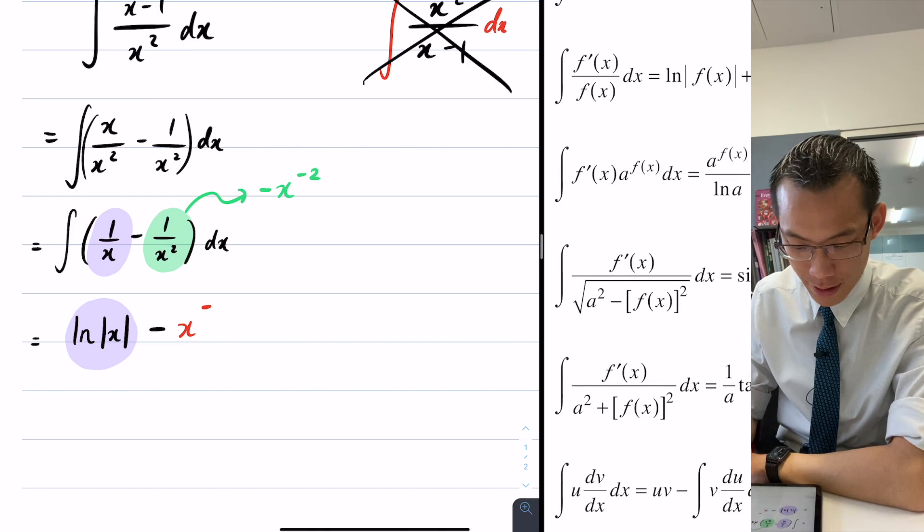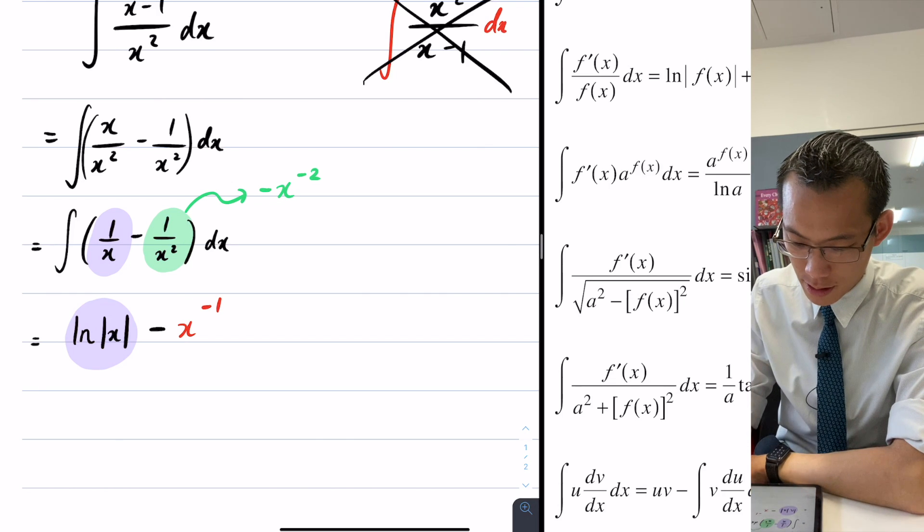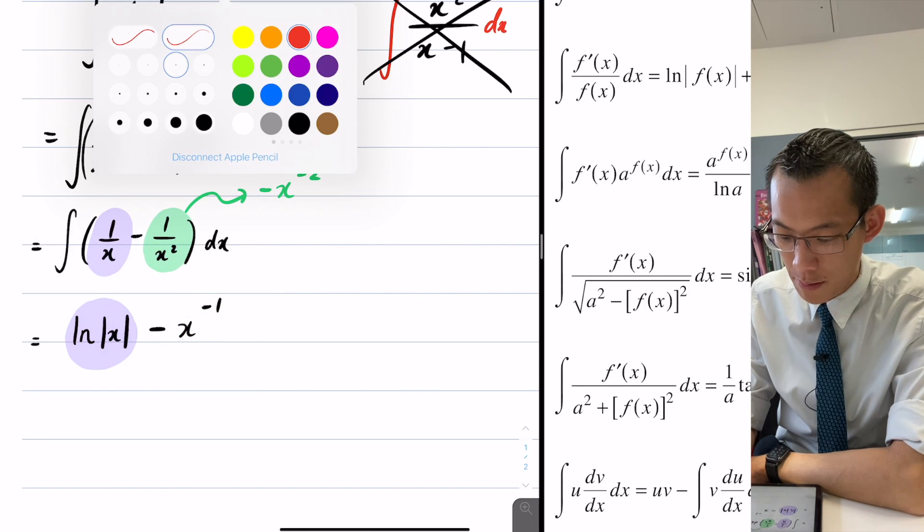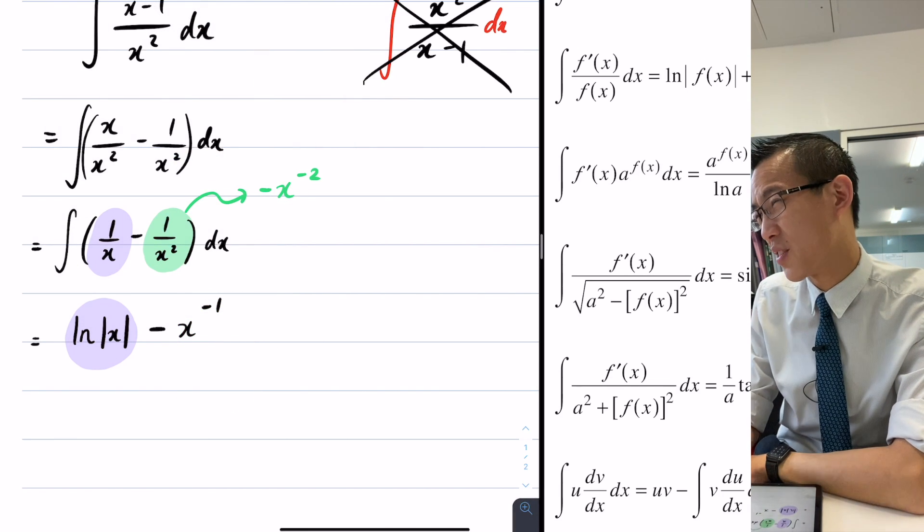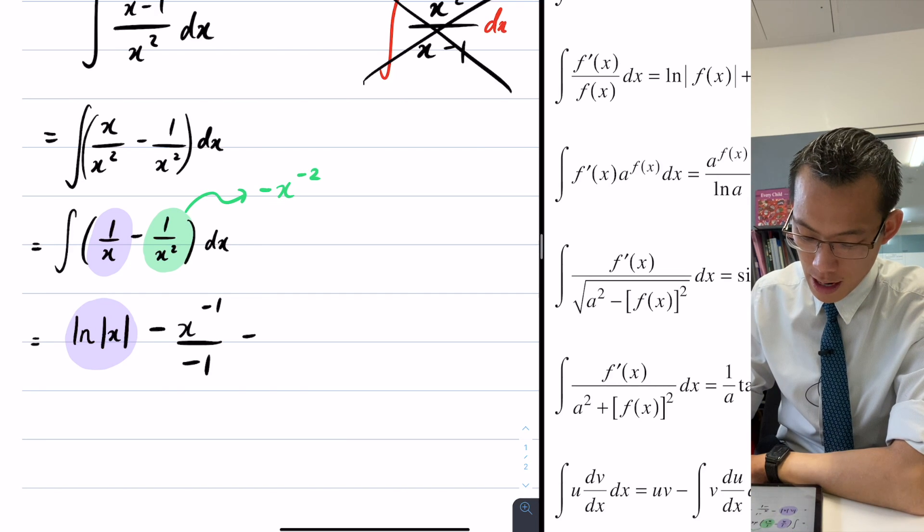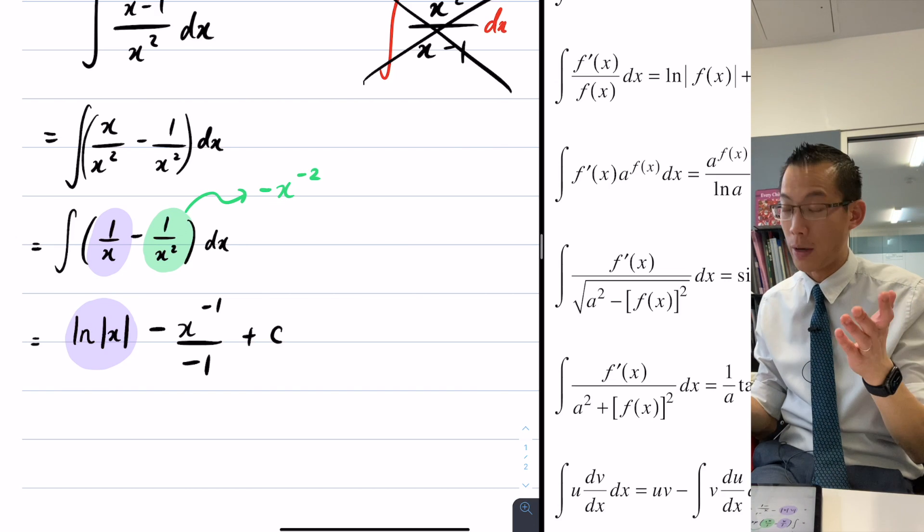And that's a very common mistake, we see it all the time. So now this is correct. So it's x to the negative 1, my new power. I need to divide by that, so divide by negative 1. And then I add my constant, I just gave you an indefinite integral, so therefore we have a constant integration.